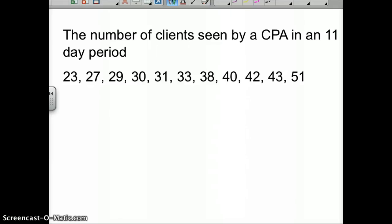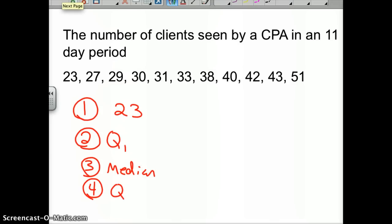Here's the number of clients seen by a CPA in an 11-day period. I've already arranged the data from least to greatest, from 23 to 51. Let's find the five-number summary. First off, your lowest is 23, and five is your largest value, which is 51.